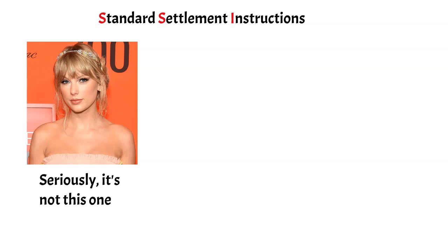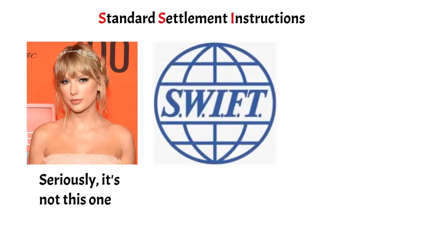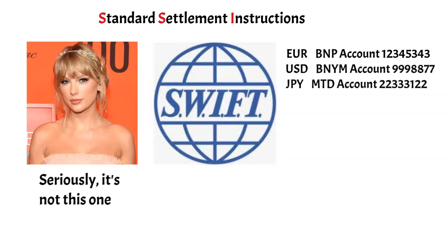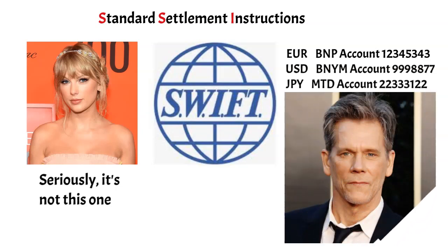What if the receiving bank you want to send funds to doesn't have a relevant SSI? Banks tend to have a default counterparty they deal with for each currency. As an example, the Bank of New York Mellon is the Kevin Bacon of banks — through six degrees of separation they will work out how to get US dollars to any bank in the world.